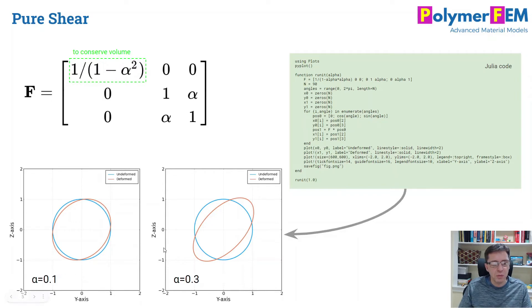This is alpha equal to 0.1. The figure to the right is the same deformation that occurs when I apply alpha 0.3, so there's a little bit more distortion here. I created these figures using the Julia code on the right, if you're interested in performing that as well. But that's how pure shear really works.